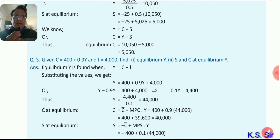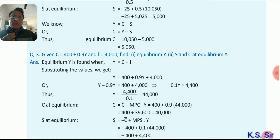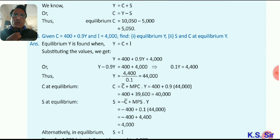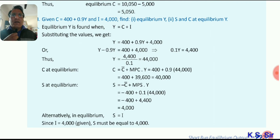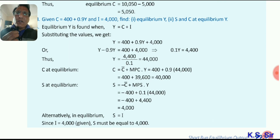Question 3: Given a consumption function and investment, find equilibrium income and then equilibrium saving and consumption. Using the formula Y equals C plus I, substitute the consumption function — income equals 400 plus 0.9Y plus the given investment. Solve for Y using standard algebraic calculation. You can ask your problems anytime; using these formulas you can solve numerical problems.